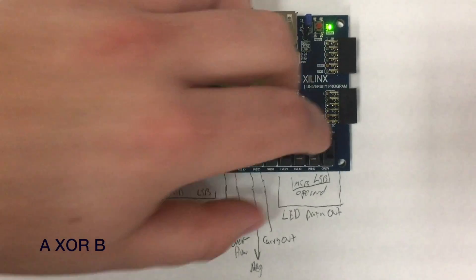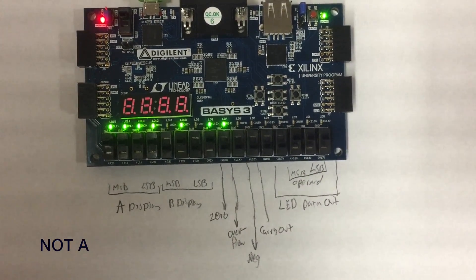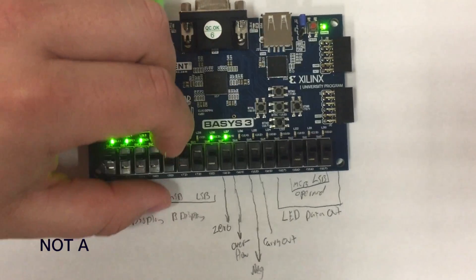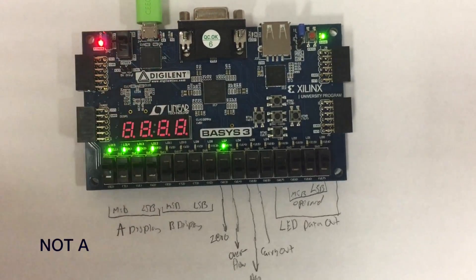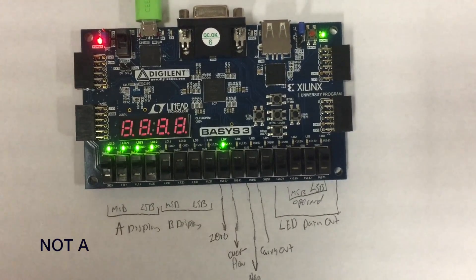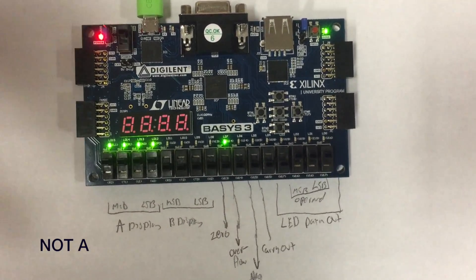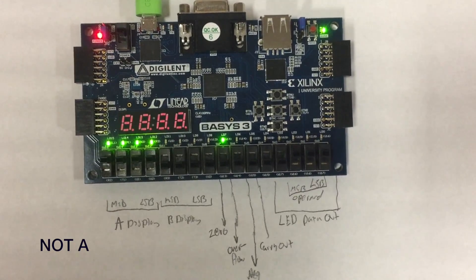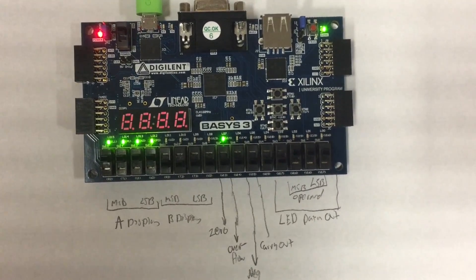For our last operand we will be doing 1 1 1 1, which will be NOT a. Since this only uses input a, we will be selecting input a as 1 1 1 1, which with a NOT will become 0 0 0 0 on our output, and we have our zero flag up because of that.